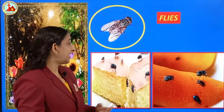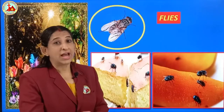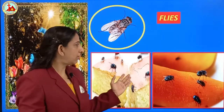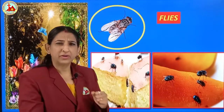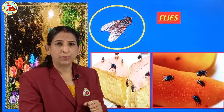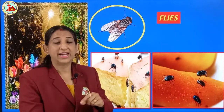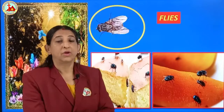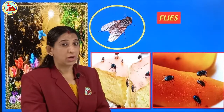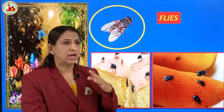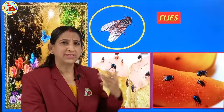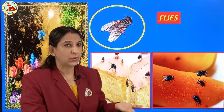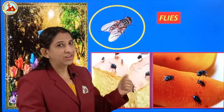Next is flies. You all must have seen these. Whenever our food is open, it comes and sits on it, and it even spreads diseases. We even call them house flies because in the house we see them very often wherever the food is open.